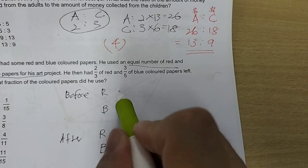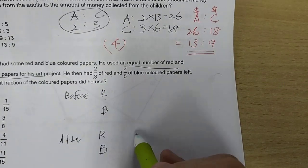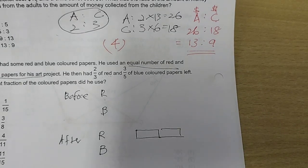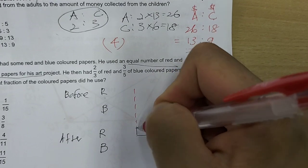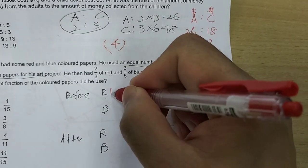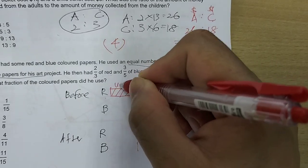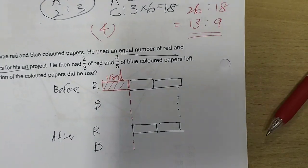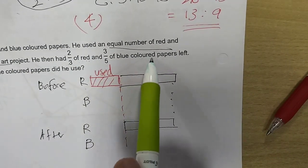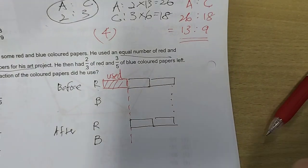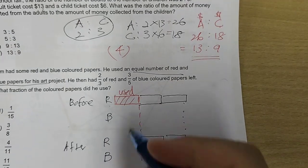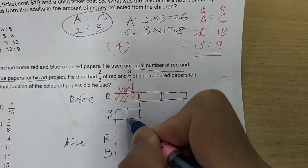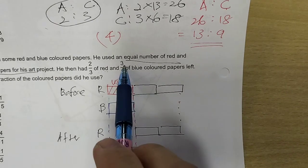He used the same number. And then he had two-thirds of red left. Red, two-thirds. If two-thirds was left, that means that this must be the one-third that was used. And this was a two-third of the red. And then three-fifths of the blue coloured papers were left. If three-fifths were left, that means that blue, that means that two-fifths must have been used. Two-fifths were used. And three-fifths were left.